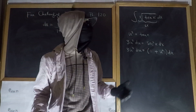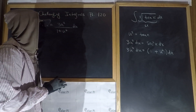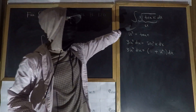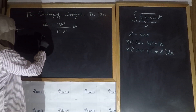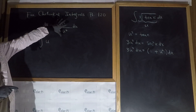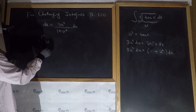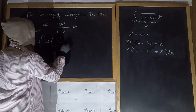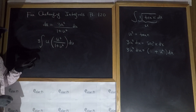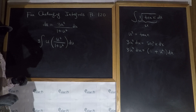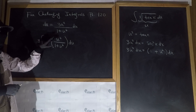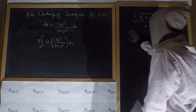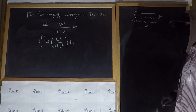Now we have all the ingredients to rewrite the given integral in terms of u. The cube root of tan(x) is just u, and dx is that expression we found. So I'll take the 3 out front, and write u squared over (1 + u⁶) du. I'm going to keep it as u times u squared rather than combining to u cubed — you'll see why that's helpful.